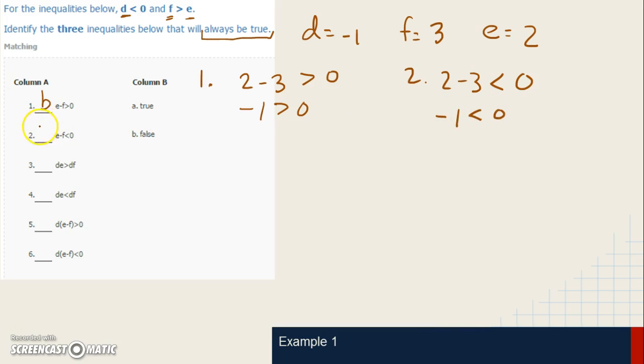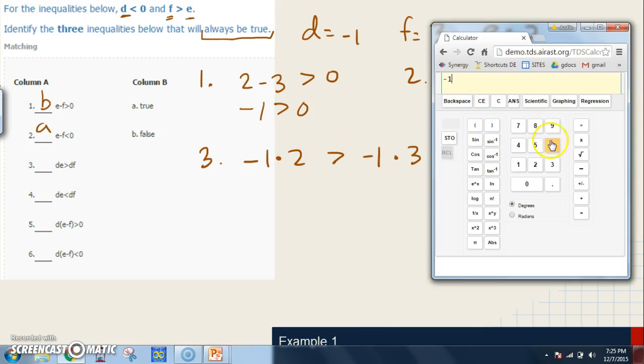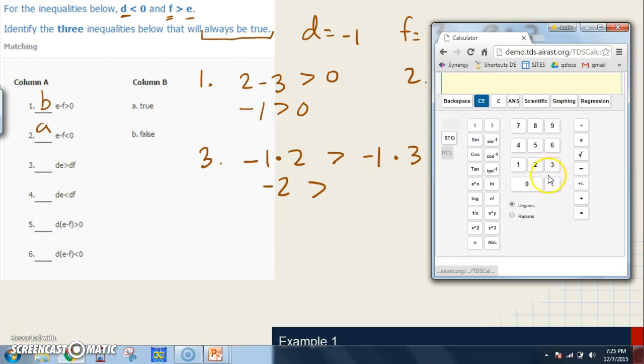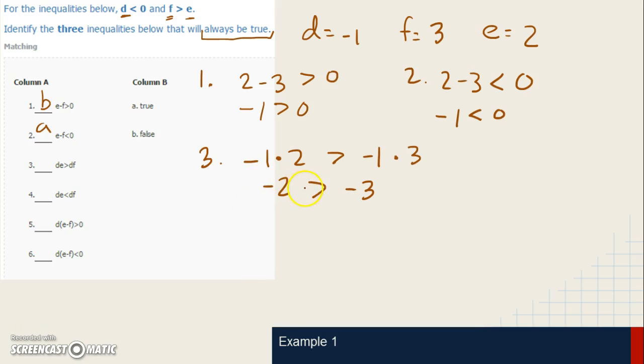Number 3: D times E. D is negative 1 times E which is 2. Is that greater than negative 1 times 3? Negative 1 times 2, that's negative 2. Negative 1 times 3, that's negative 3. Read it again: negative 2 greater than negative 3. Is owing somebody 2 dollars a greater amount than owing somebody 3 dollars? Yes, the person who only owes 2 dollars is richer than the person that owes 3. So that is actually true.